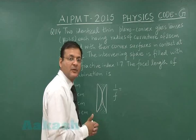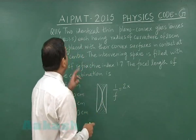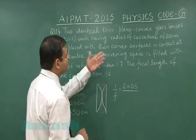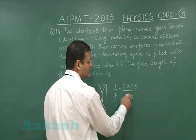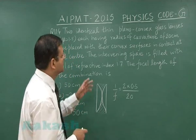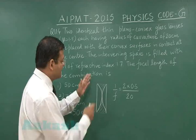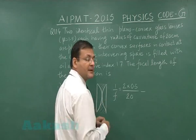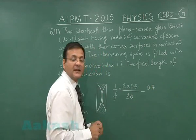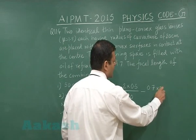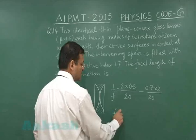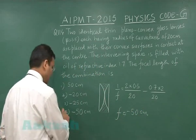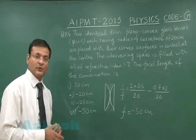The refractive index is 1.5, so (1.5 minus 1) gives 0.5, divided by the radius of curvature of 20 centimeters. The intervening oil medium behaves like a concave lens, so take its focal length as negative: (mu minus 1) gives 0.7, times (2/R) with R equal to 20. Solving the entire expression gives a focal length of minus 50 centimeters, and the most appropriate answer is option four for question 114.